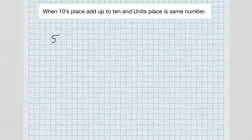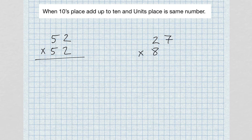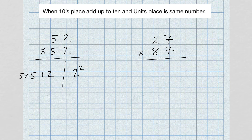A couple more practice problems: 52 times 52. Left-hand side: five times five plus two; right-hand side: two squared. Five times five gives us 25; 25 plus 2 gives us 27. Two squared is 4, but we need two digits, so we write it as 04. Answer: 2704.